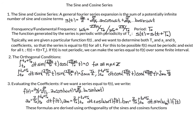We have these orthogonal conditions which become important when evaluating the coefficients. First, if we integrate a sine times a cosine, this equals zero. Second, if we integrate a sine of one frequency times a sine of a different frequency, that gives the Kronecker delta delta_{mn} times T_0 over 2. So when we integrate two sines of different frequencies we get zero; if they're the same frequency we get T_0/2. Similarly for cosine: different frequencies give zero, same frequency gives T_0/2.